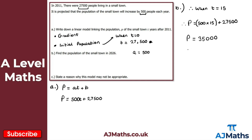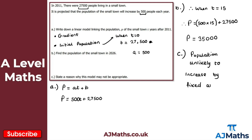So the population of the small town in 2026 would be 35,000 people. For part c, we're asked to state a reason why this model may not be appropriate. The most obvious reason would be that the population is unlikely to increase by the same fixed amount each year. That one-mark answer completes our solution to question one.